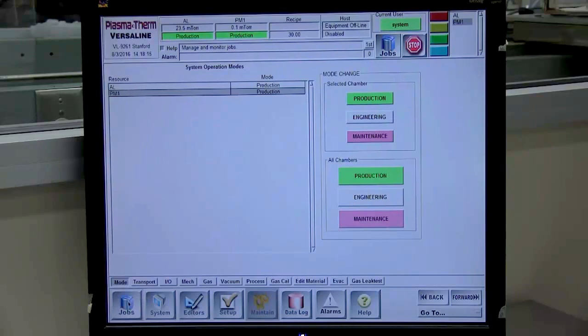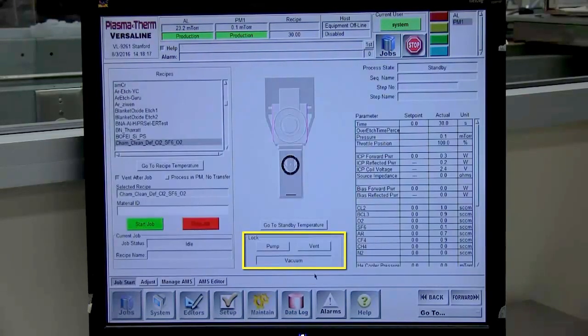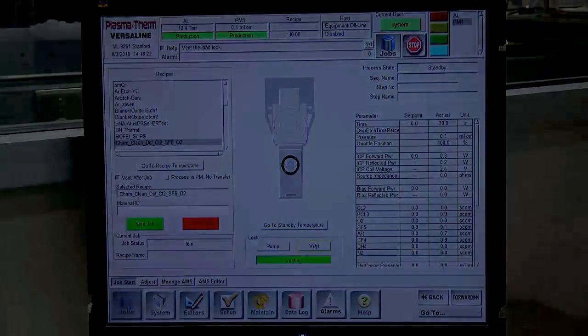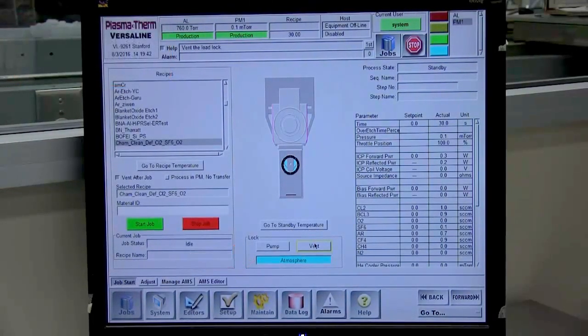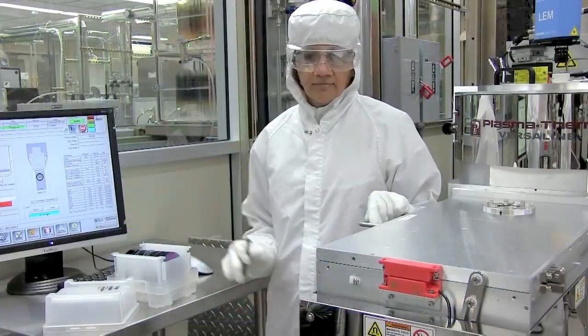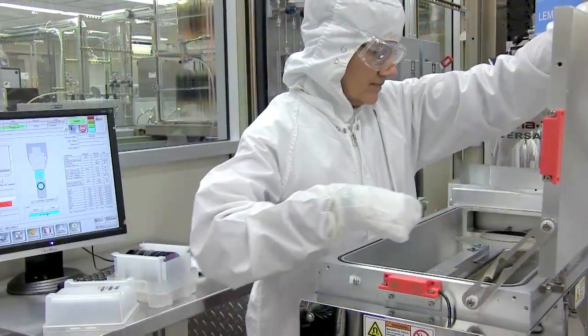Vent the load lock by clicking the vent button under lock control. Once the load lock is vented and at atmosphere as indicated, open the load lock door, remove the wafer in the arm, and load your wafer.